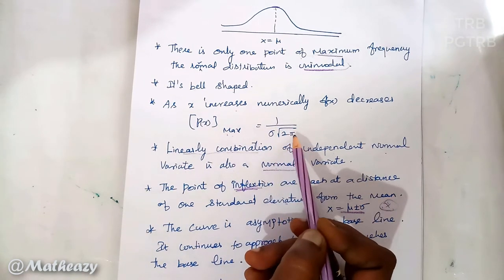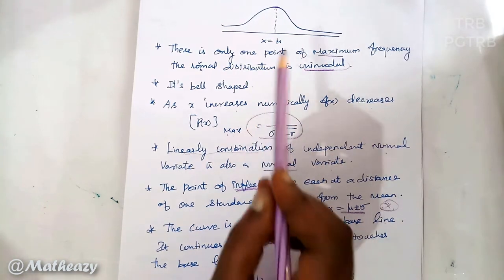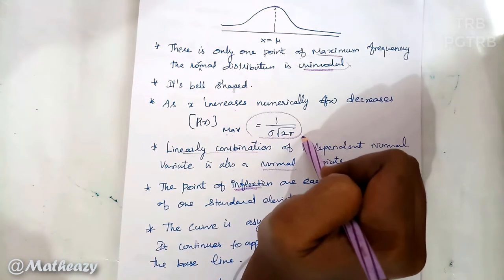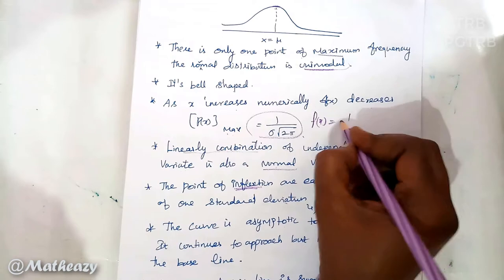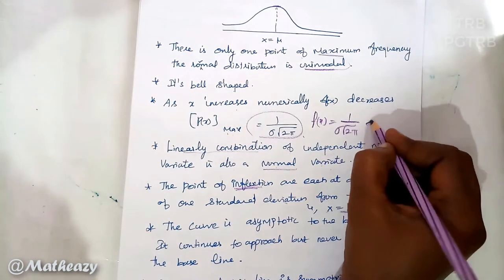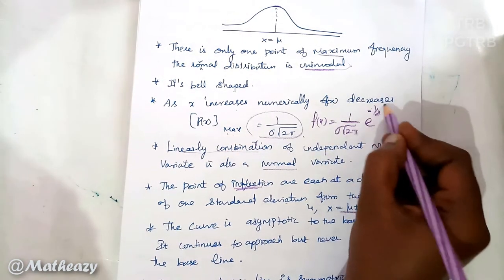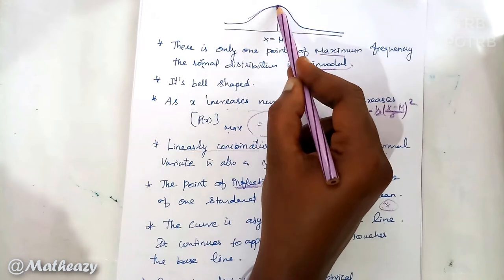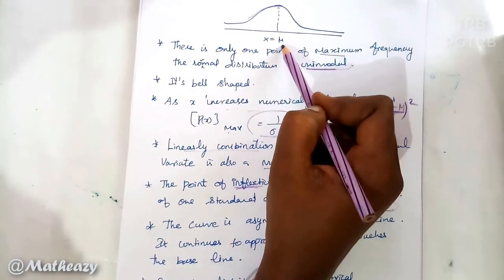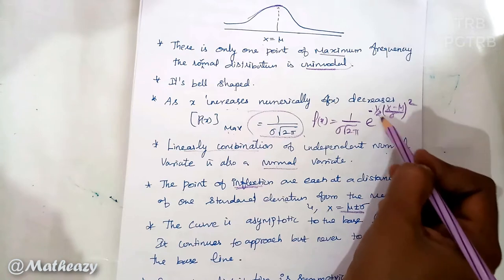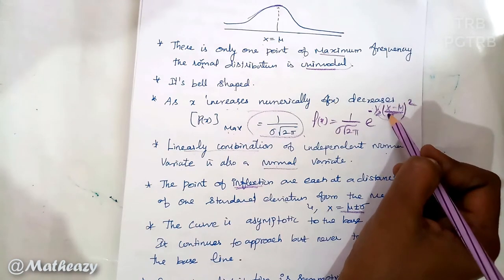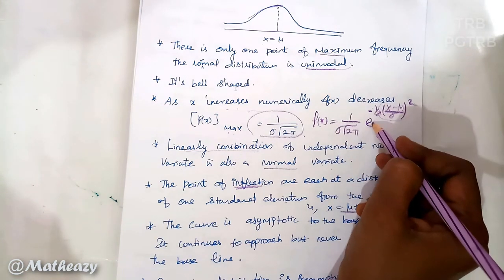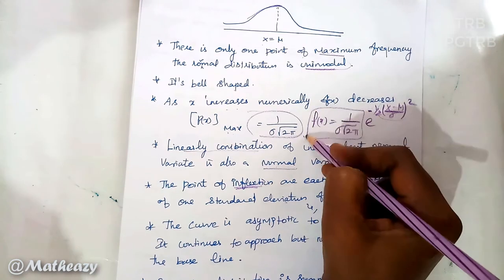The maximum value of f(x) occurs at x = mu and equals 1/(σ√2π). This is because at x = mu, the exponent term becomes e^0 = 1, so f(x) = 1/(σ√2π) × 1 = 1/(σ√2π). This is the maximum ordinate of the normal distribution.